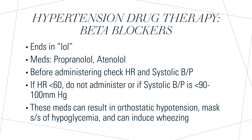Hypertension drug therapy: beta blockers. Beta blockers are used to reduce blood pressure. This class of medications ends in '-olol,' such as propranolol and atenolol. One important thing to note is to check your heart rate and systolic blood pressure before administering. If your heart rate is below 60 or systolic is below 90–100 mmHg, do not administer this medication. These medications can also cause wheezing, orthostatic hypotension, and masking of signs and symptoms of hypoglycemia.